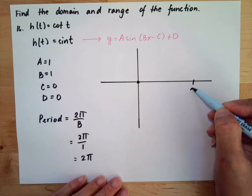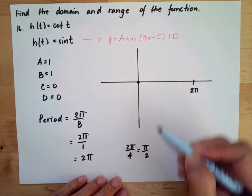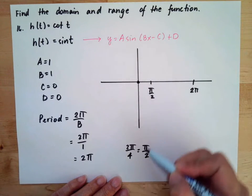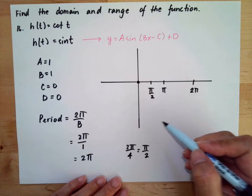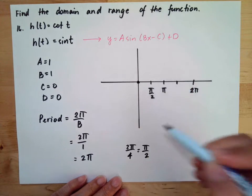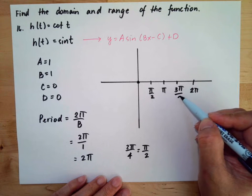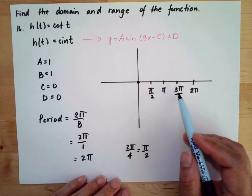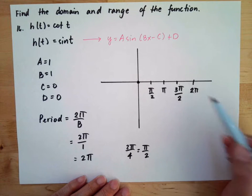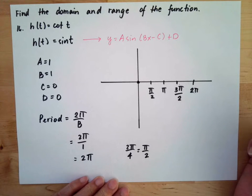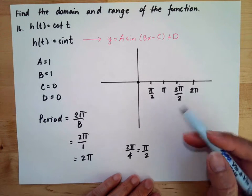We have 2π divided by 4, which equals π/2. So our first coordinate is π/2. We keep adding π/2 for each coordinate: π/2, π, 3π/2, and the full cycle ends at 2π. Trigonometric functions are continuous — the graph never ends, and one cycle repeats indefinitely.